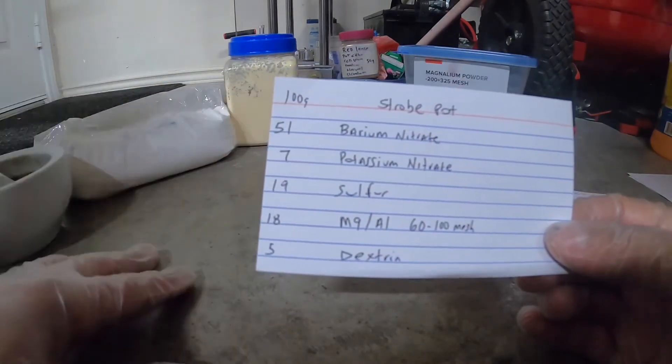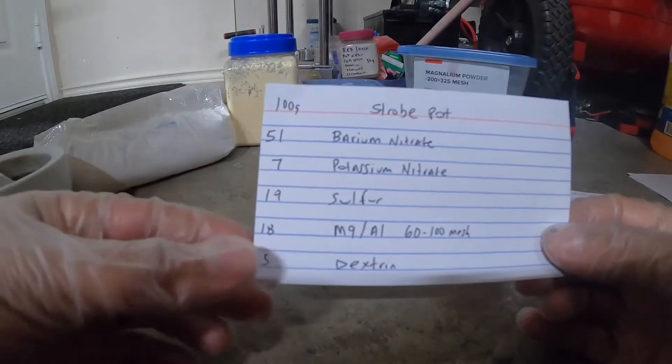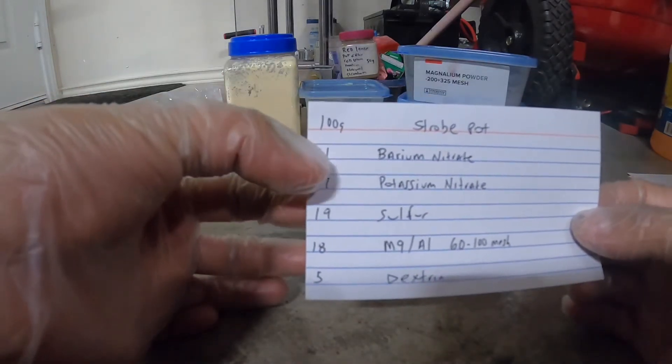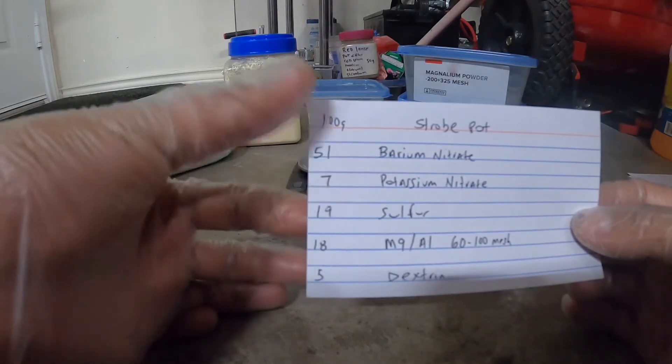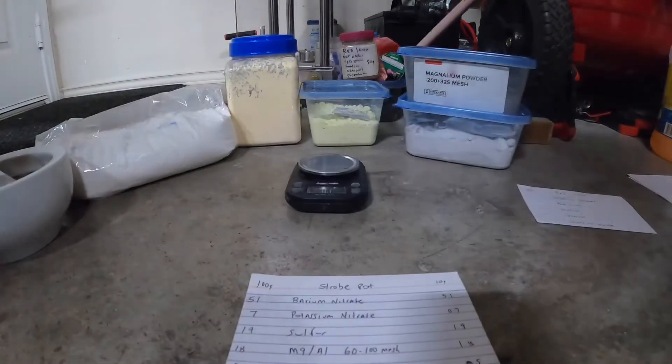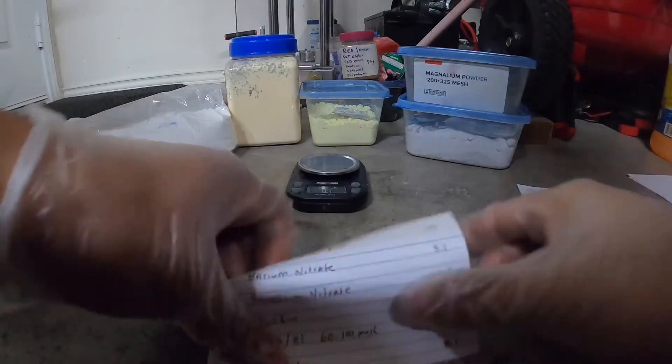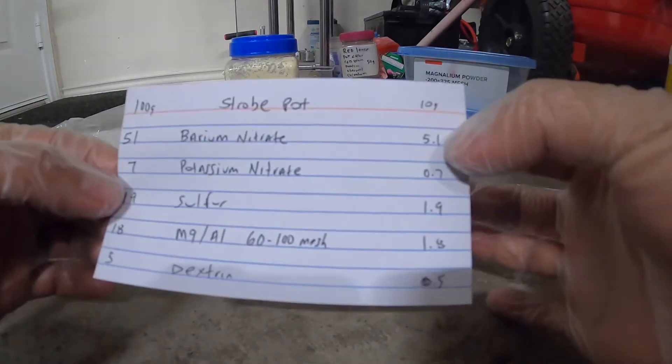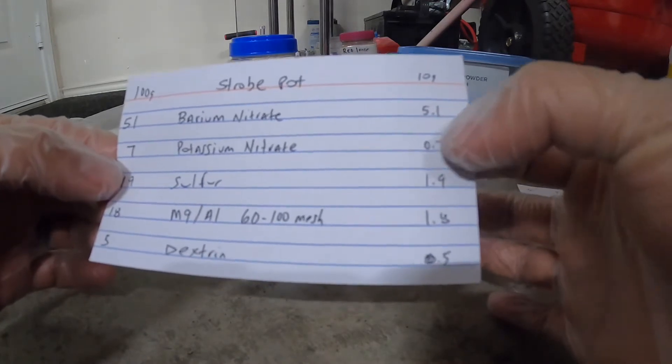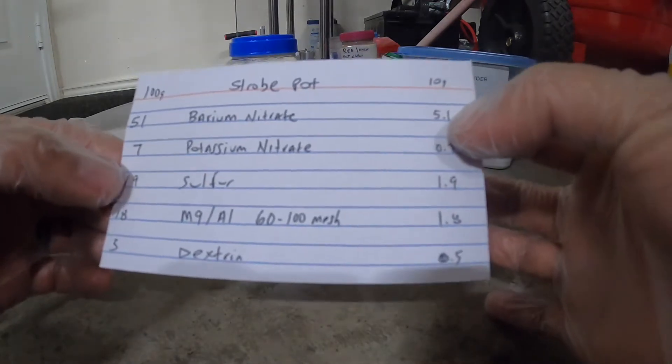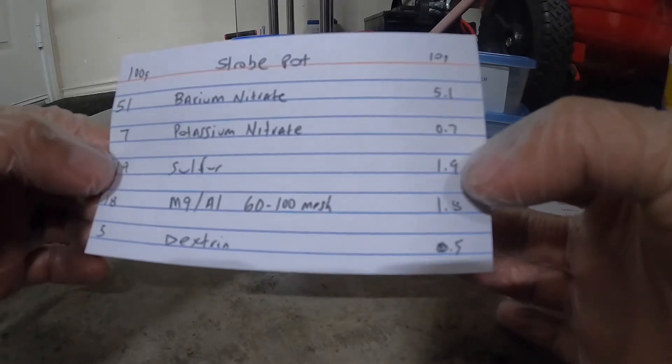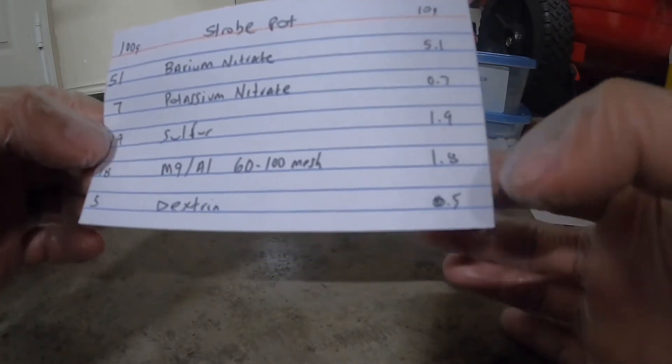I'm only going to be making 10 grams though, because this is just a test. I don't want to waste most of my chemicals, but I'm going to do a quick conversion so I can write down to 10 grams and then we're going to go from there. Alright, since we're making 10 grams, this is going to be the amounts I'm going to be using: 5.1 grams of barium or strontium nitrate, 0.7 grams of potassium nitrate, 1.9 sulfur, 1.8 magnalium, and then 0.5 of dextrin.